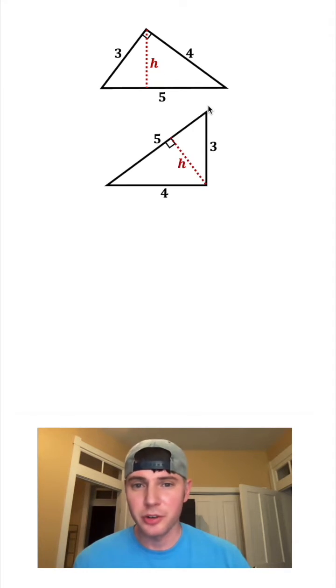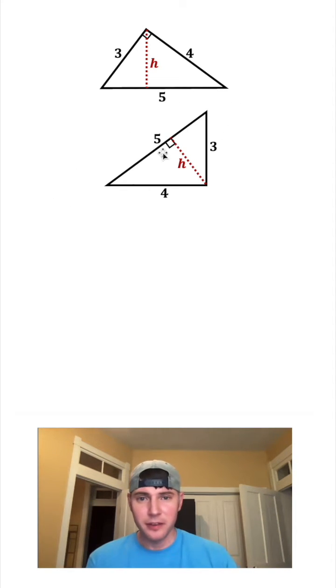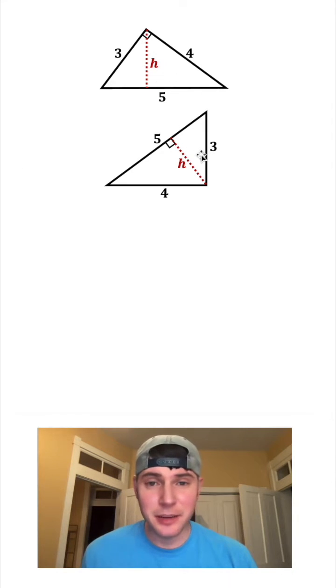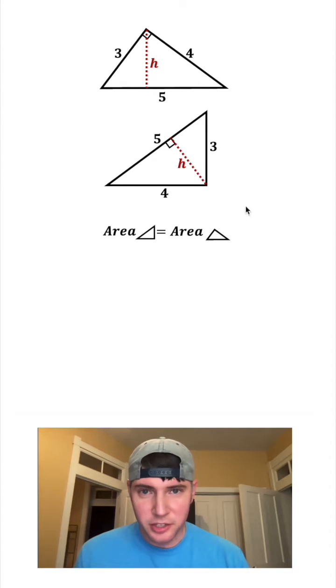If we redraw the triangle right here—so I've just turned it onto its side, still the 3-4-5, and then here's the h at this angle—since these two triangles are the exact same triangle, that means their areas must be equal to each other. This triangle is this bottom one, and then this triangle is this top one.